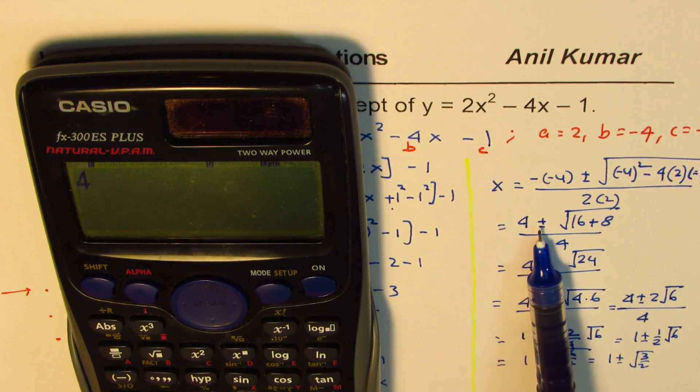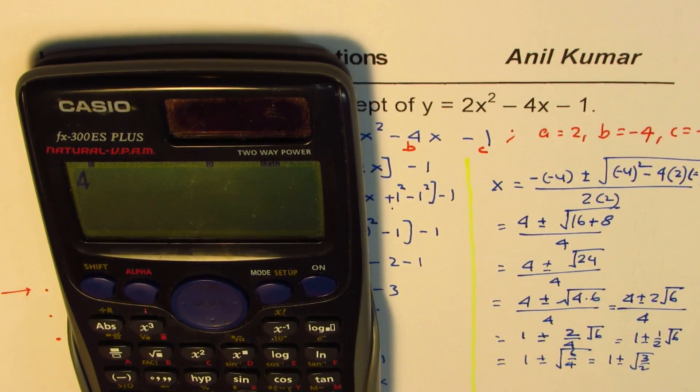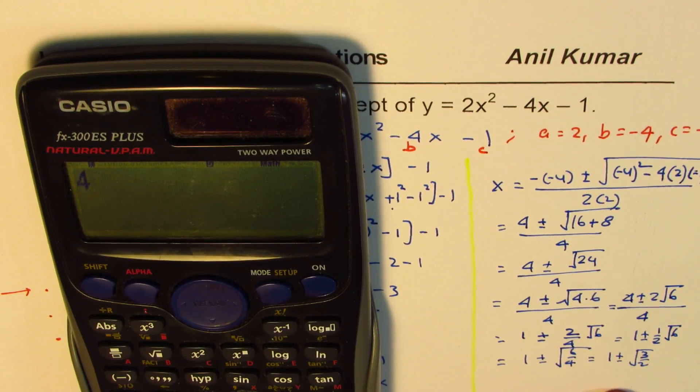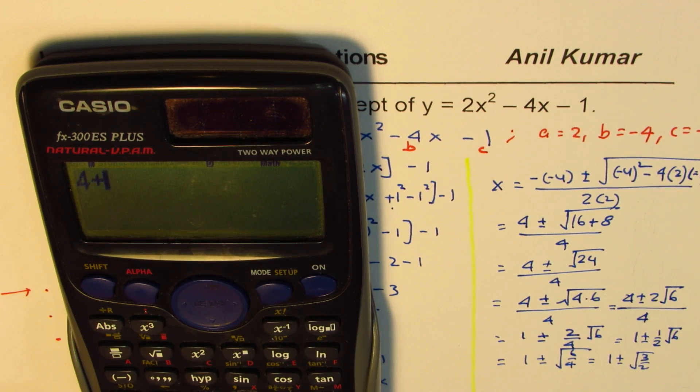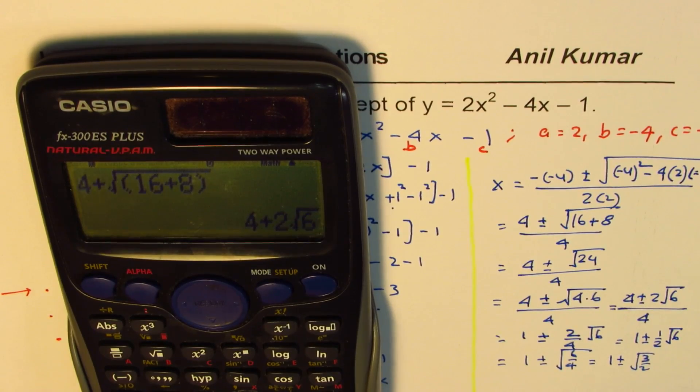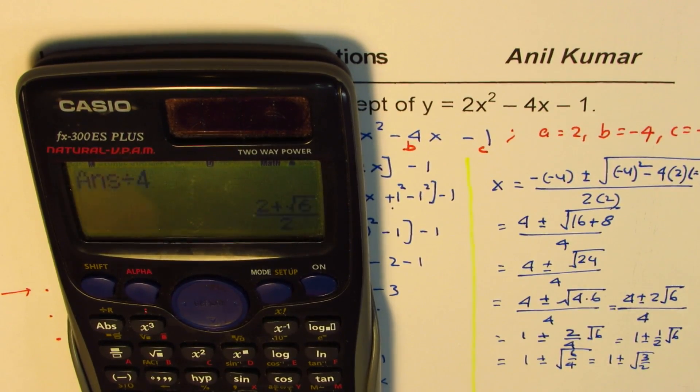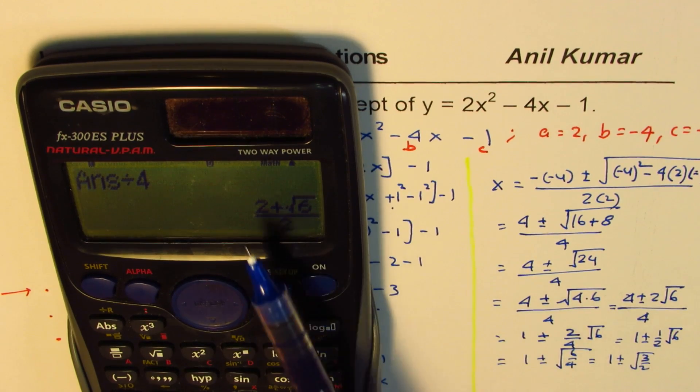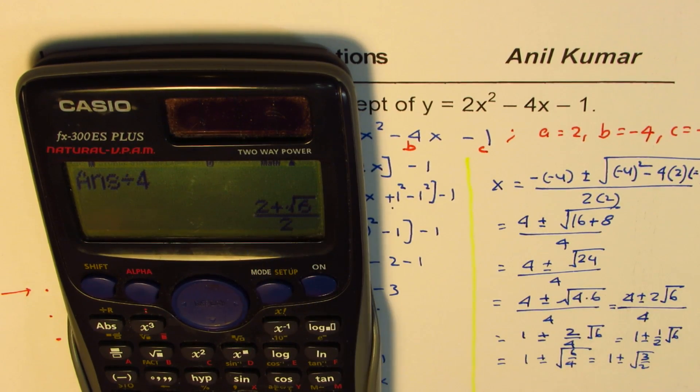So we have 4. So instead of plus and minus, let me just write plus, then we'll do the other one also. So 4 plus with a square root, we have 16 plus 8. So let me put brackets, 16 plus 8, bracket close, and let's take all of it. What is this equal to? Well, something like this. Divide this by 4. So what do you get?